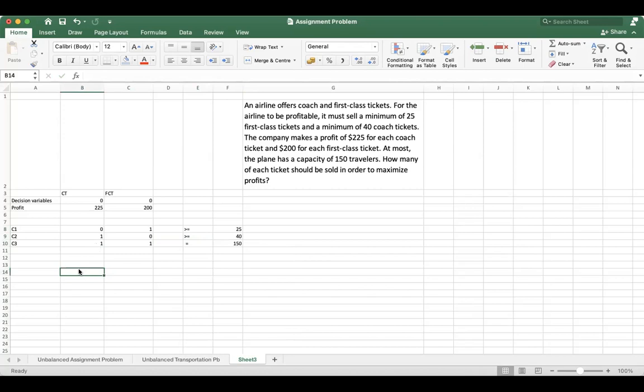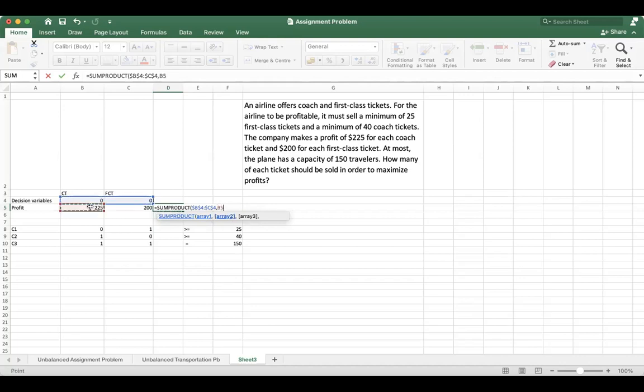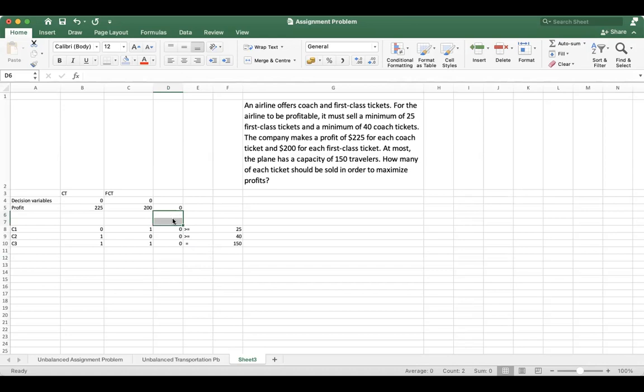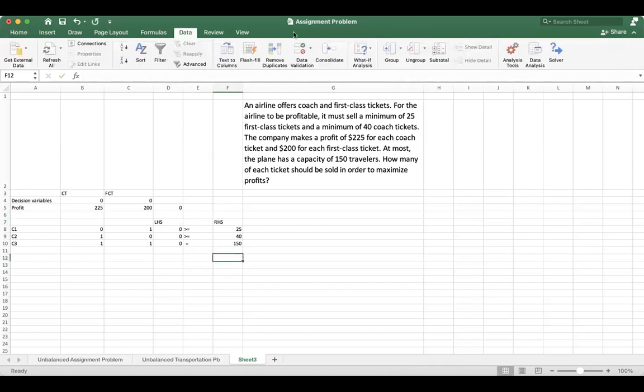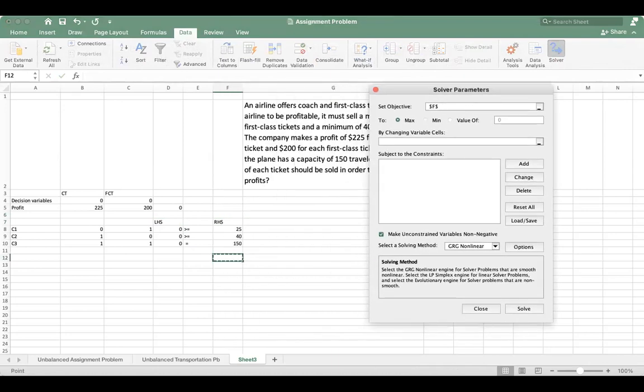Now it is similar to the problems that we have solved earlier. To find out the profit, we need to multiply this array with Command+T if you're using Mac, or F4. We have basically multiplied these decision variables with their respective profit. The profit associated with each coach ticket was 225 and each first-class ticket was 200. Now we'll just drag this formula. This is our left-hand side, we call it LHS, and this is our right-hand side.